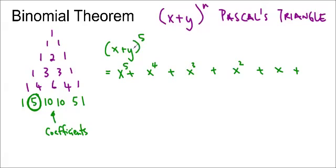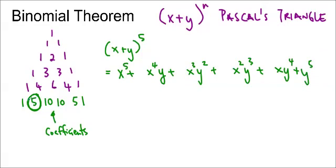For the y's, I'm going to start at 0 and move my way up: y to the 0, y to the 1, y to the 2, y to the 3, y to the 4, y to the 5. And the coefficients are 1, 5, 10, 10, 5, and 1. And this is the expanded polynomial, just like that.